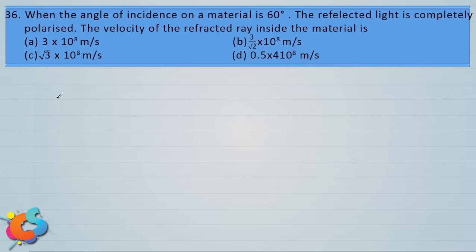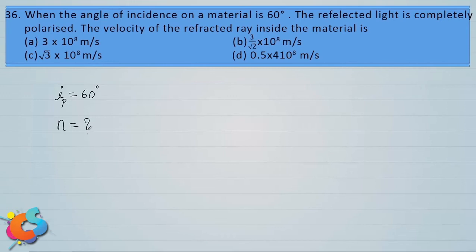At 60 degrees the reflected light is completely plane polarized, confirming that this angle of incidence is the polarizing angle, so ip = 60 degrees. Using Brewster's law, we can find the refractive index, and from the refractive index we can find the speed of light inside the denser medium.